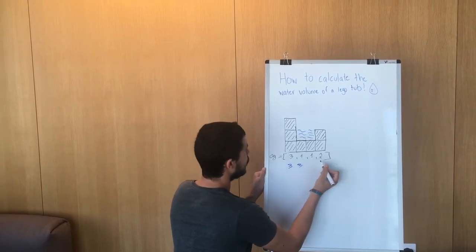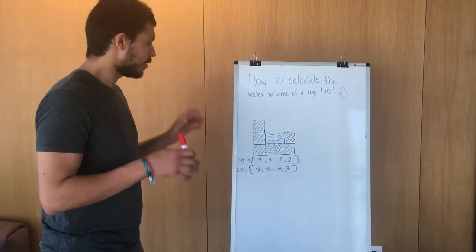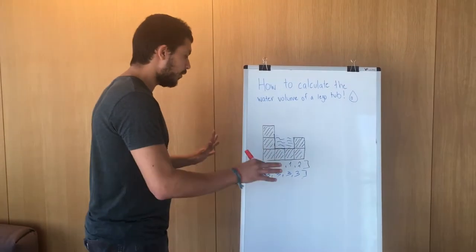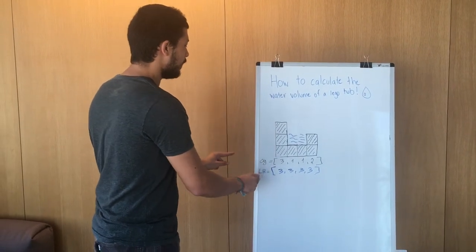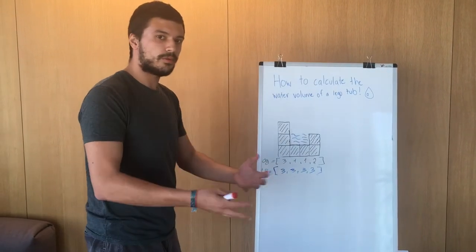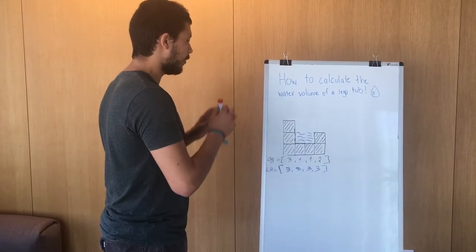Is 1 bigger than 3? No. So we keep 3. Is 2 bigger than 3? No. So we keep 3. So we found our new array of values that's read from left to right, because that's what we do when we loop through a list normally. We read from left to right.